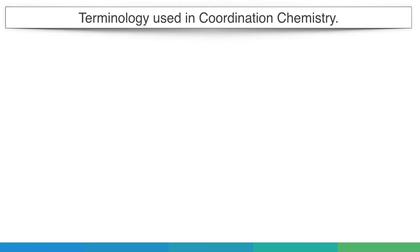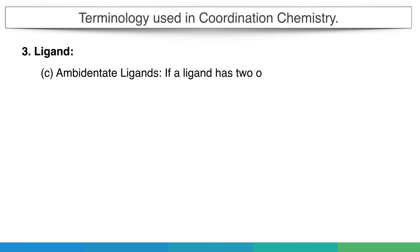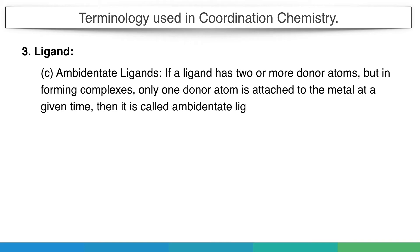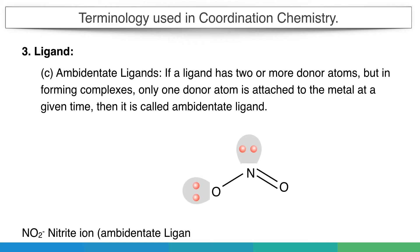Some ligands have more than one point of attachment, but during formation of a coordinate bond, only one point of attachment is used. Like in the case of nitrite ion, both nitrogen and oxygen have lone pairs, so both sides can bond with the metal atom. But in actual complex formation, only one side — nitrogen or oxygen — is attached to the metal atom. This type of ligand is called an ambidentate ligand.